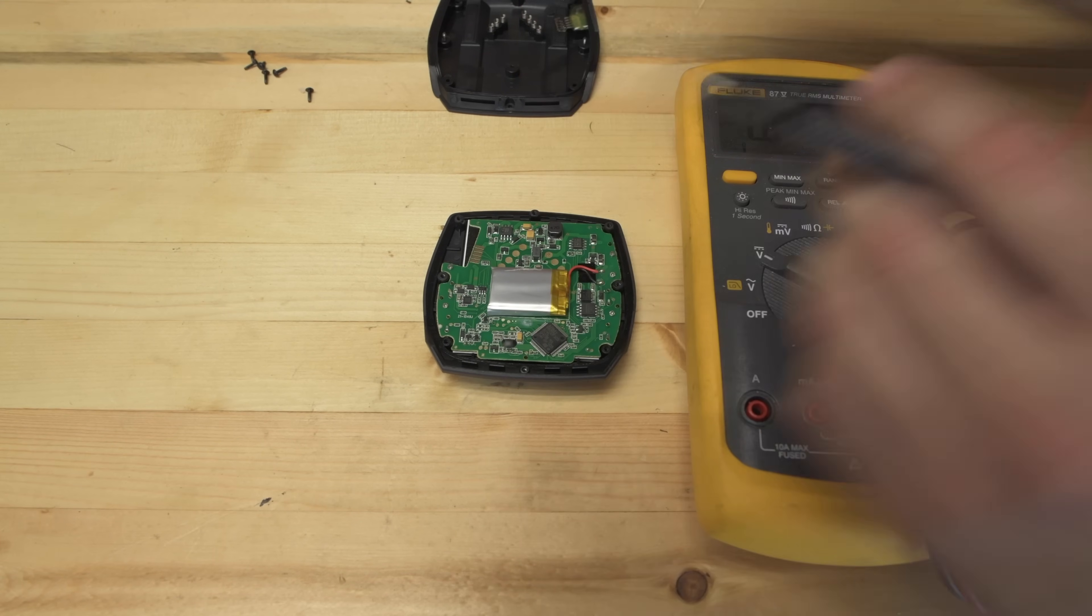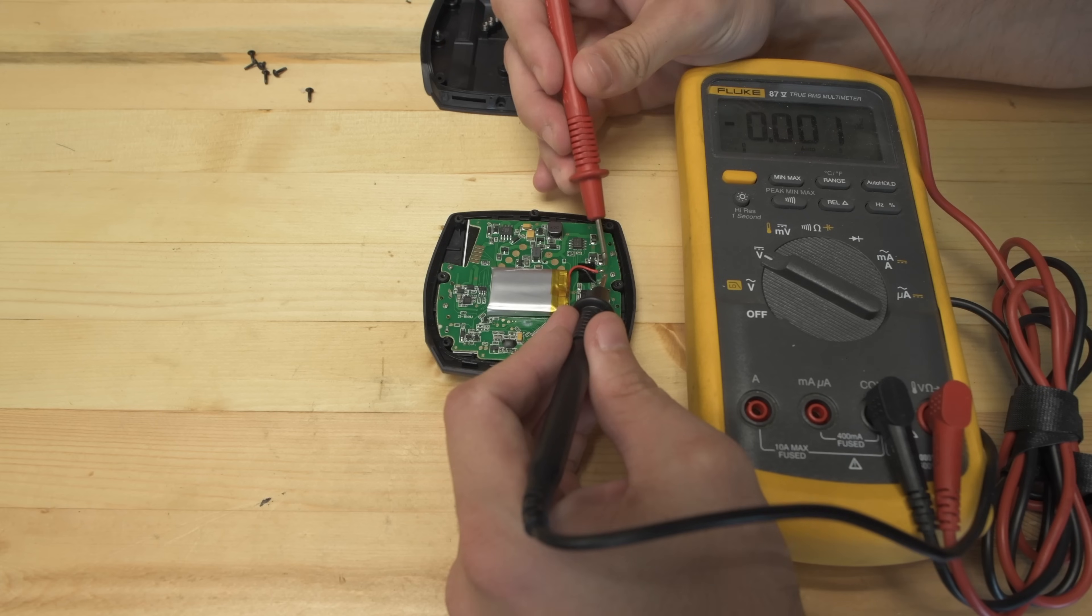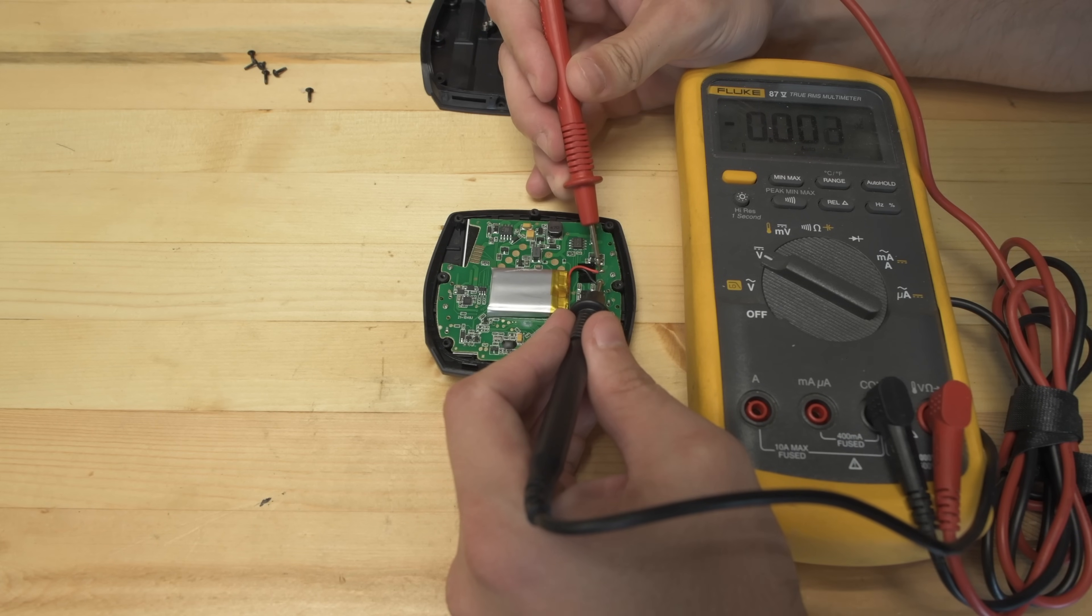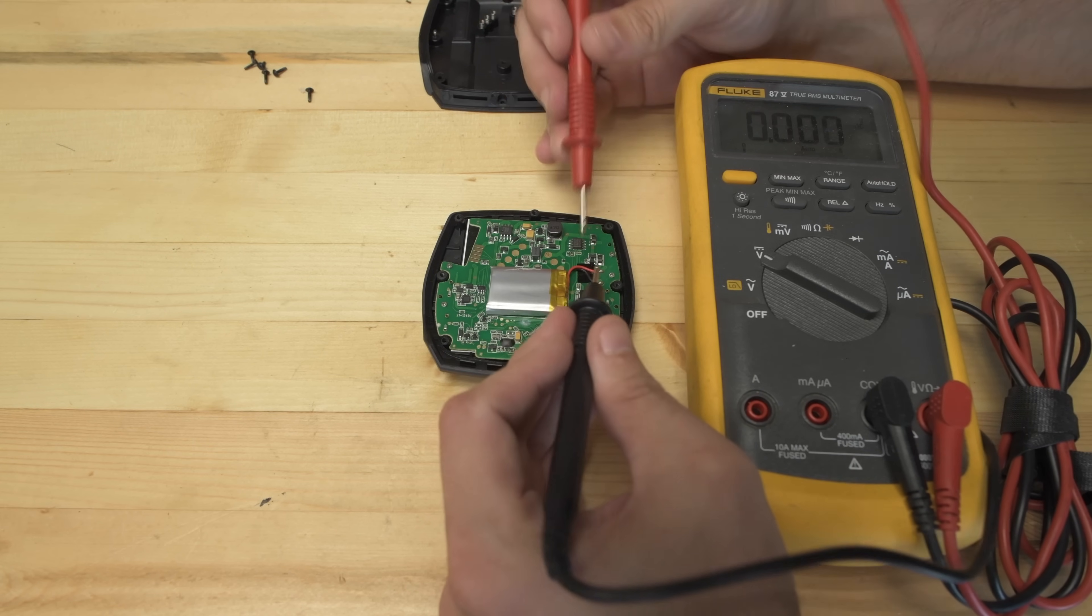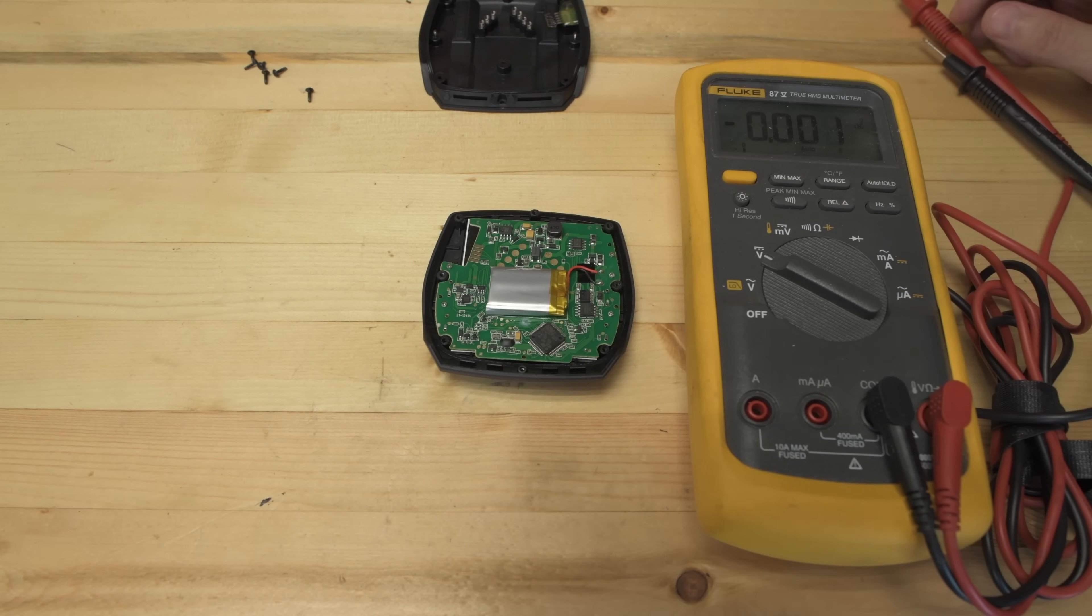So what we're going to do is we're just going to touch our leads to the wires here without touching anything else if we can help it. And I'm getting 0.662 volts DC. So that's a 3.7 volt cell. It's definitely dead. It would normally be 2.6 volts or higher or 2.3 volts or higher if it was healthy.